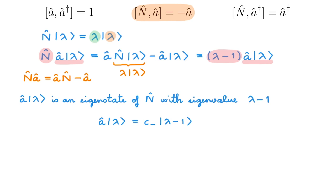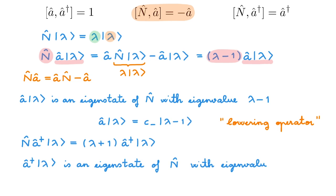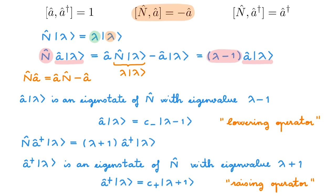So when a acts on an eigenstate of N, it gives another eigenstate of N but with eigenvalue decreased by 1. This is the reason why we call a a lowering operator. Repeating the same exercise for a dagger, we find that N acting on a dagger lambda gives lambda plus 1 times a dagger lambda — meaning a dagger lambda is an eigenstate of N with eigenvalue lambda plus 1. We can write the action of a dagger as C plus times lambda plus 1, and since the eigenvalue increases by 1 we call a dagger a raising operator.